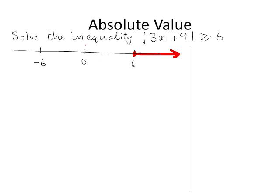Since the distance between 0 and 6 is 6, the distance between any number from 6 onwards and 0 must be bigger than or equal to 6. So 3x plus 9 could be any number out there, or 3x plus 9 could be a number from minus 6 or any number less than minus 6, since the distance between any such number and 0 must be bigger than or equal to 6.